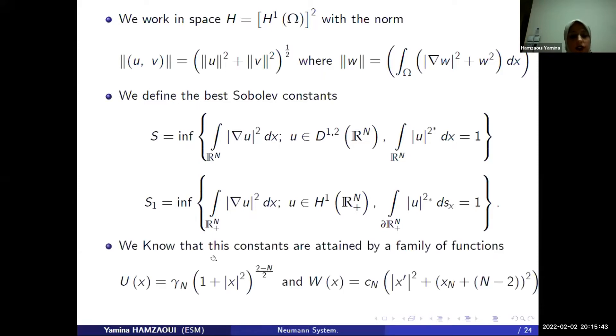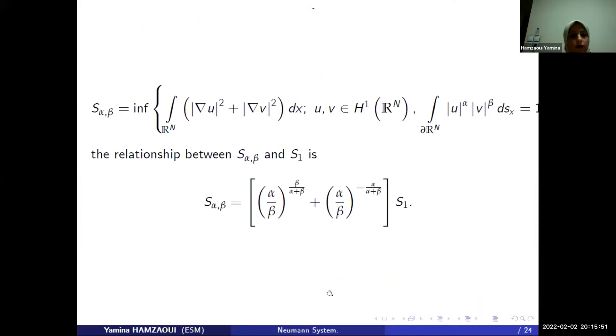And we define the best Sobolev constant S and S1. We know that these constants are achieved by a family of functions U of x and W of x. And S alpha beta, there is a relation between S alpha beta and the best Sobolev constant is this equality.